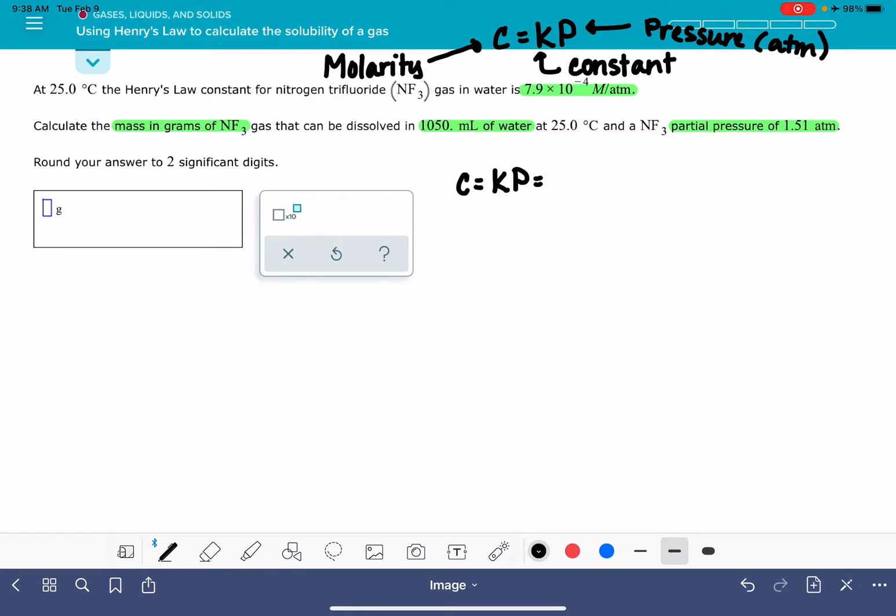C equals Kp. K is 7.9 times 10 to the minus 4 molarity per atmospheres times the pressure, 1.51 atmospheres. Those atmosphere units cancel, and we are left with units of molarity, and the molarity is 0.0011929 molar.